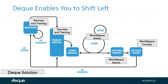While there are other facets to the concept of shifting left with accessibility, today we're primarily focused on looking at automation in the development process — either while building code or as part of a continuous integration process — so that I don't have to do everything in QA or, as has historically been the case, all the way at the end of the process.